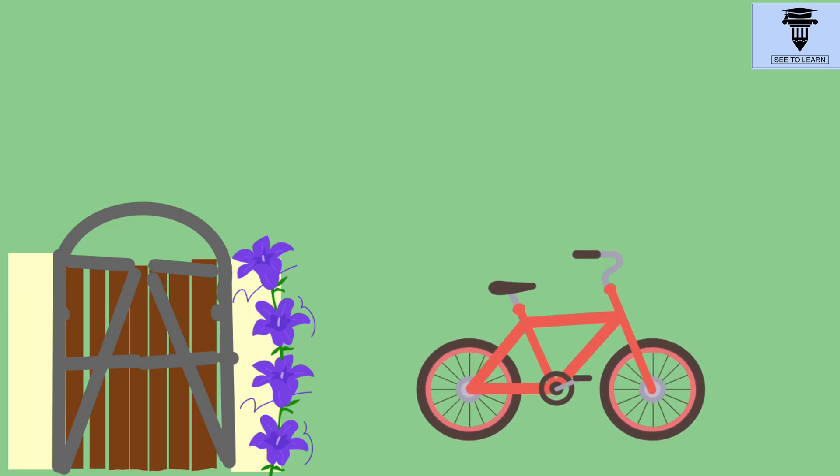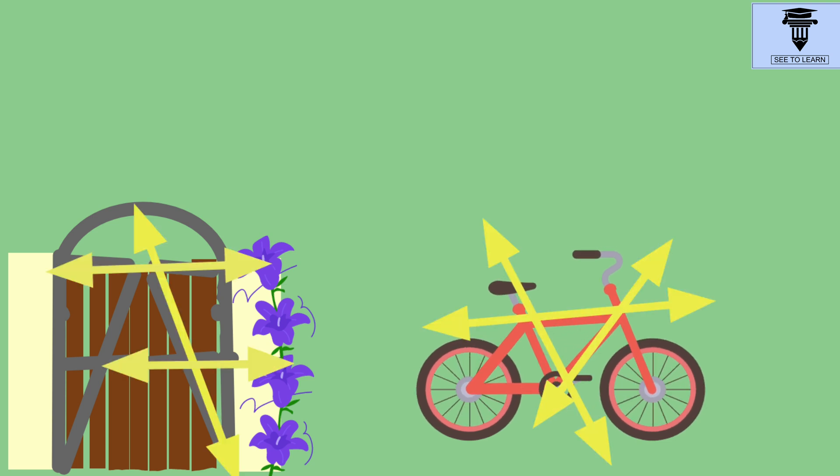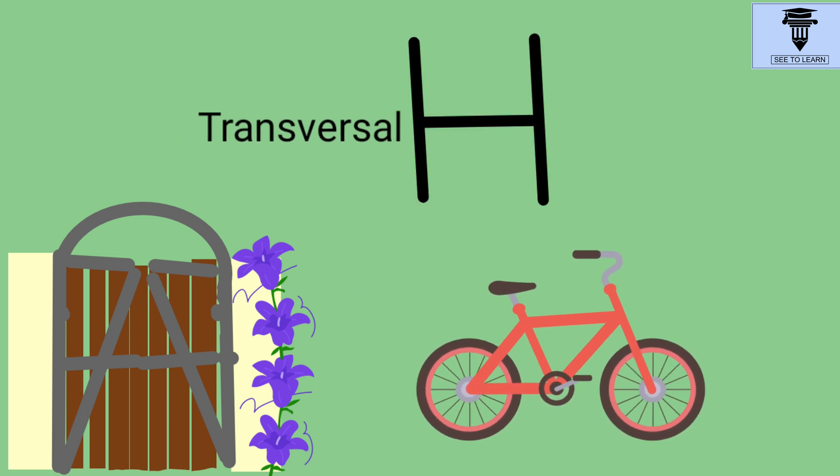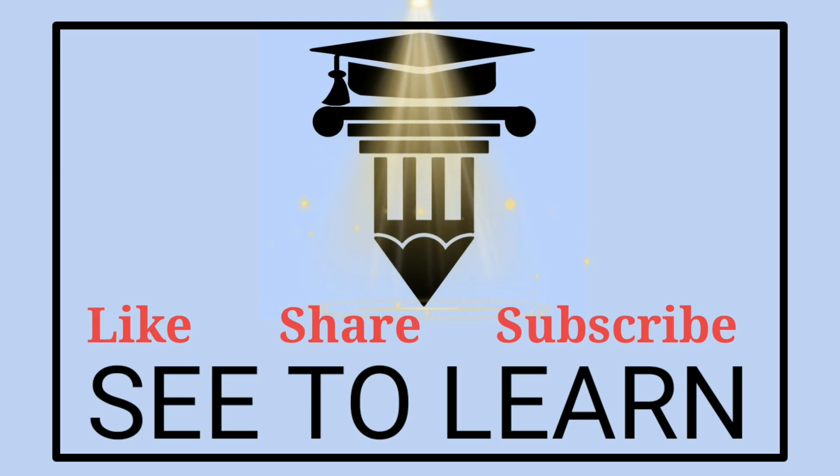Now, have a look at these objects around us. Don't they give us the idea of transversal? Even our alphabet H has a transversal. Try to find some more and write them in the comment box below. For more such videos, like, share, and subscribe.